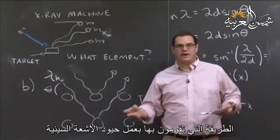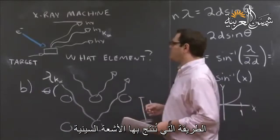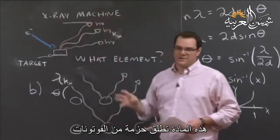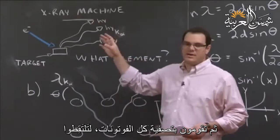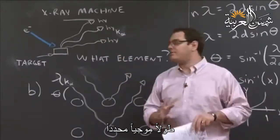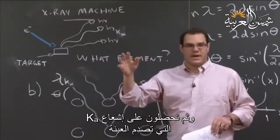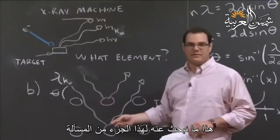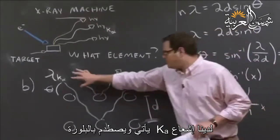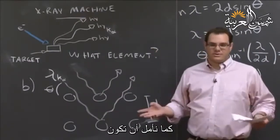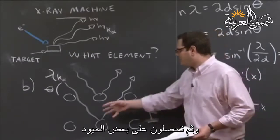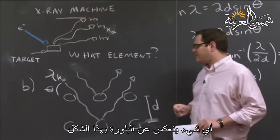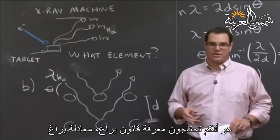Let's go back to our x-ray machine. The way you actually do x-ray diffraction — acronymized XRD — is you have to generate x-rays. You accelerate an electron into some material, that material gives off a whole bunch of photons. You then filter all the photons so you only pick up a certain wavelength — we're going to use the K-alpha wavelength. That K-alpha radiation then probes your sample, hitting the crystal structure and reflecting off in some way.